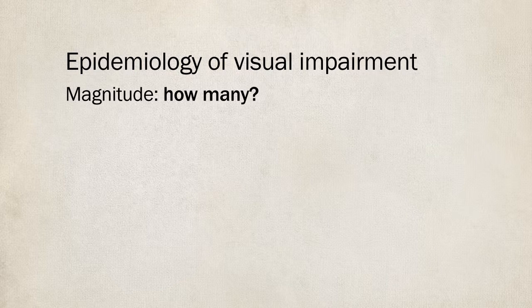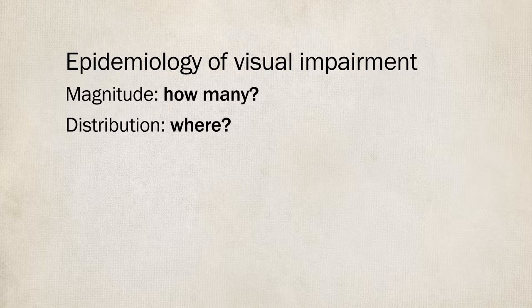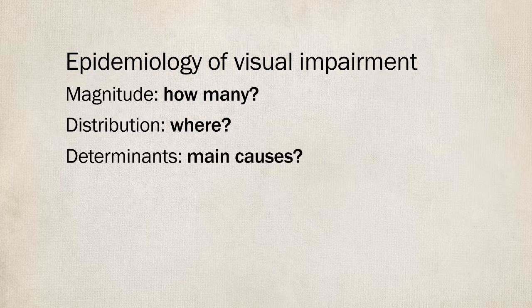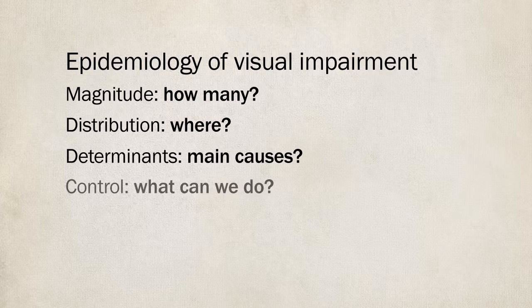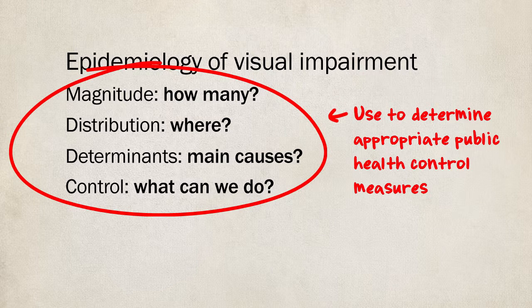We will look at four aspects of the epidemiology of visual impairment: magnitude — how many are affected; distribution — where is it; determinance — what are the main causes; and control — what can we do about it. We will use these factors to determine appropriate public health control measures.